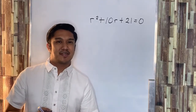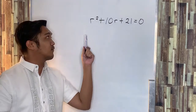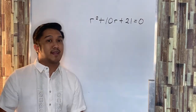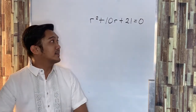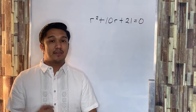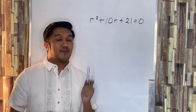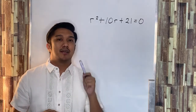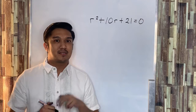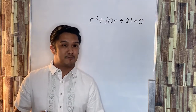Now, let's have the first example. Let us consider this equation: r squared plus 10r plus 21 is equal to zero. The first thing that we need to do is to factor out the constant term so that the sum will be equal to the middle term.